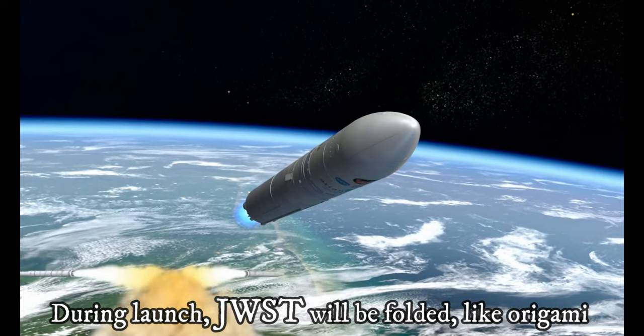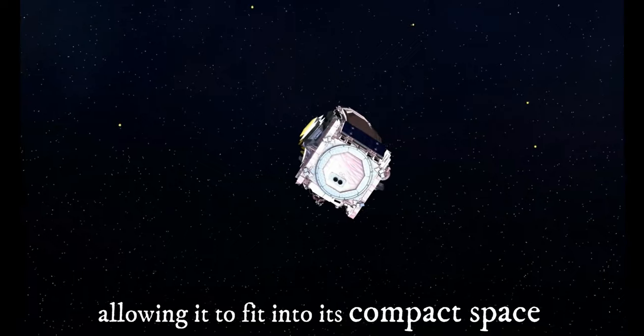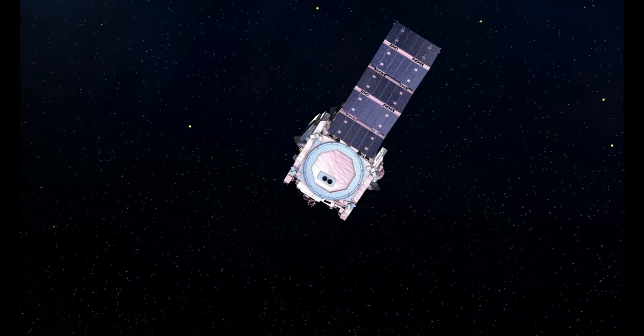During launch, JWST will be folded like origami, allowing it to fit into its compact space. Finally, once in space, the large telescope will unfold, expanding to its full size.